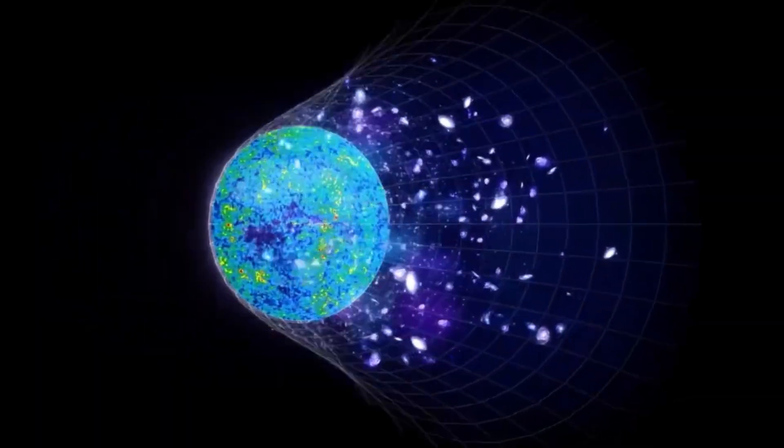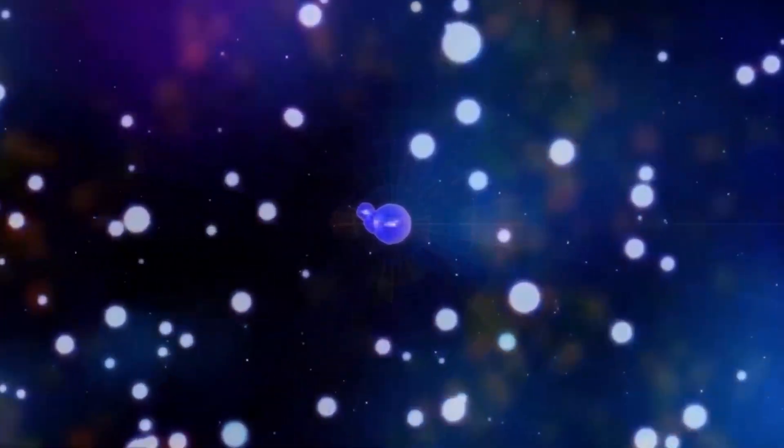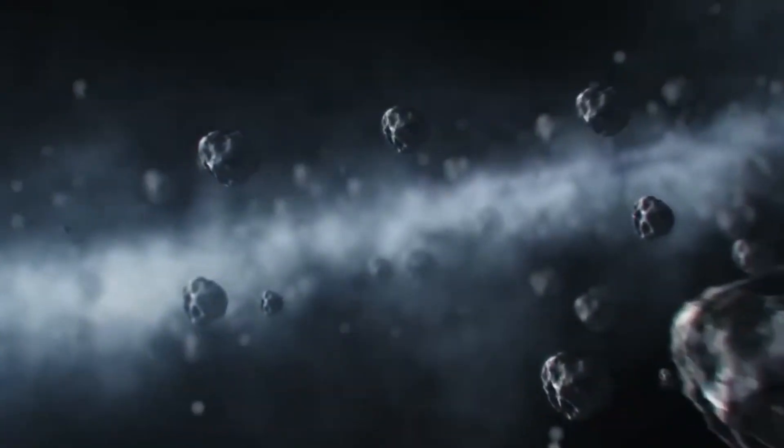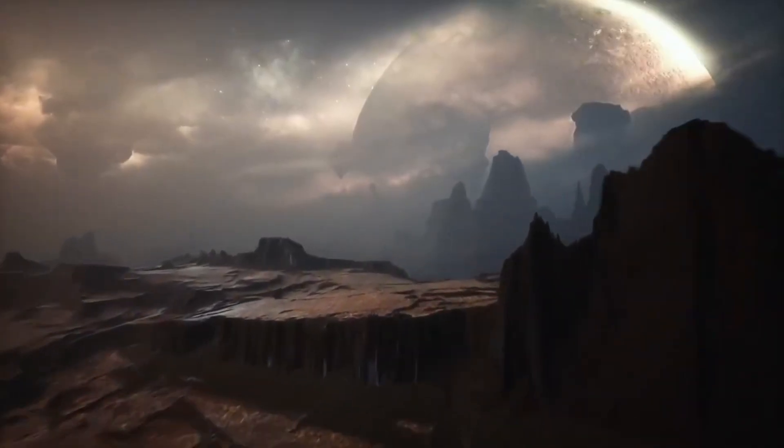When this occurs, possibly within the next thousand or million years, Betelgeuse will collapse under its own gravity, triggering a cataclysmic blast that will briefly outshine entire galaxies. The supernova will scatter its enriched elements into space, seeding future stars and planets with the materials of life.